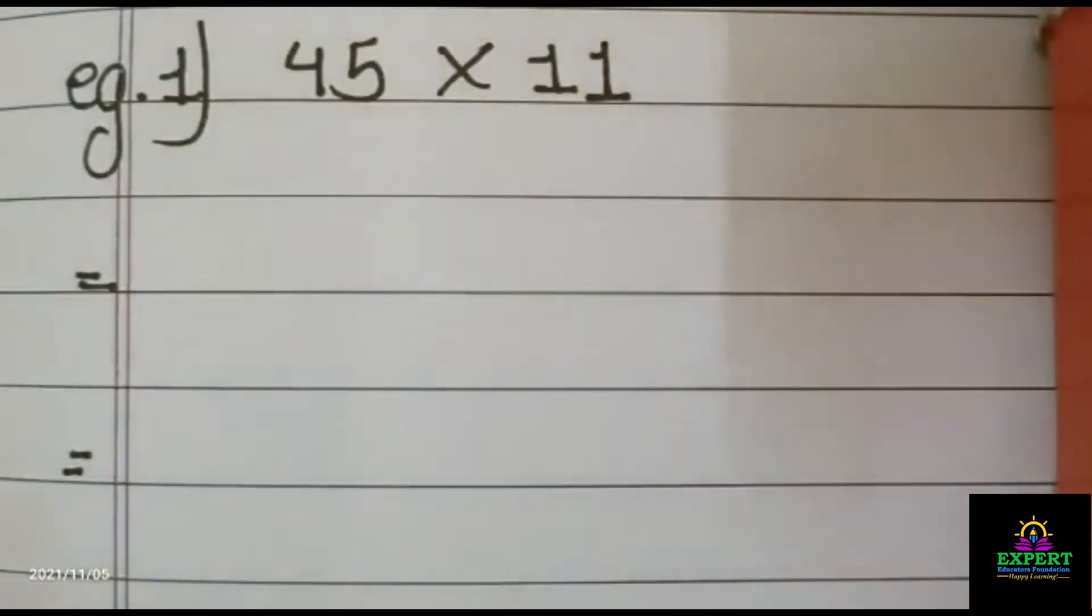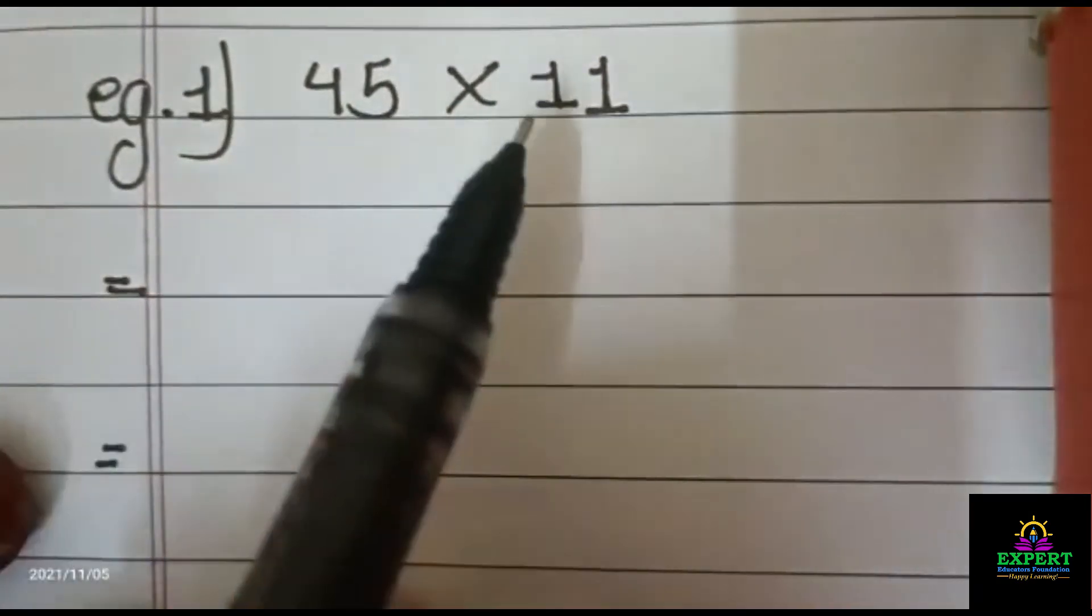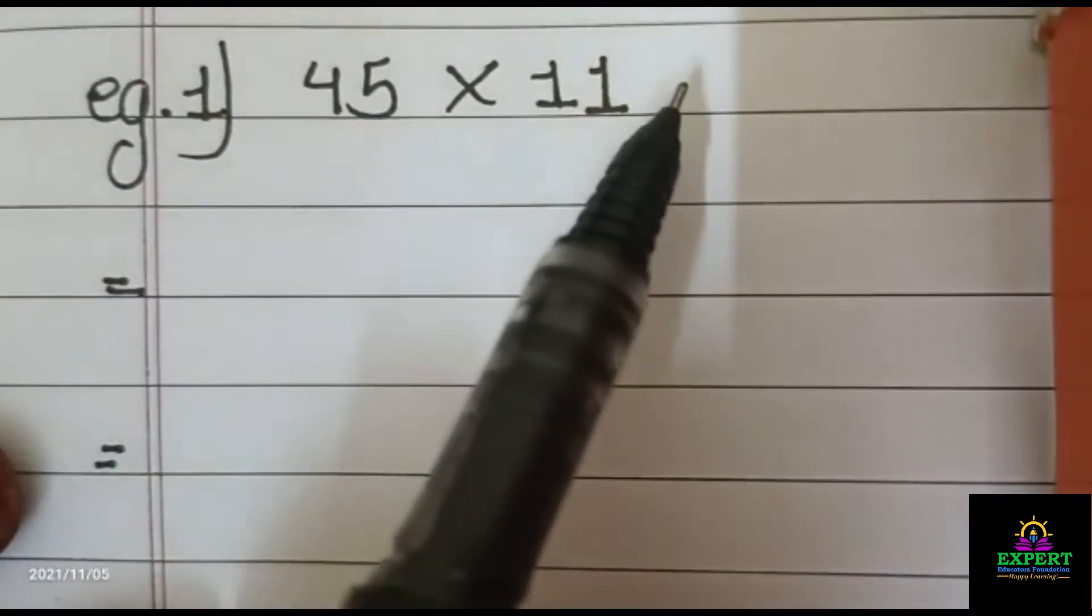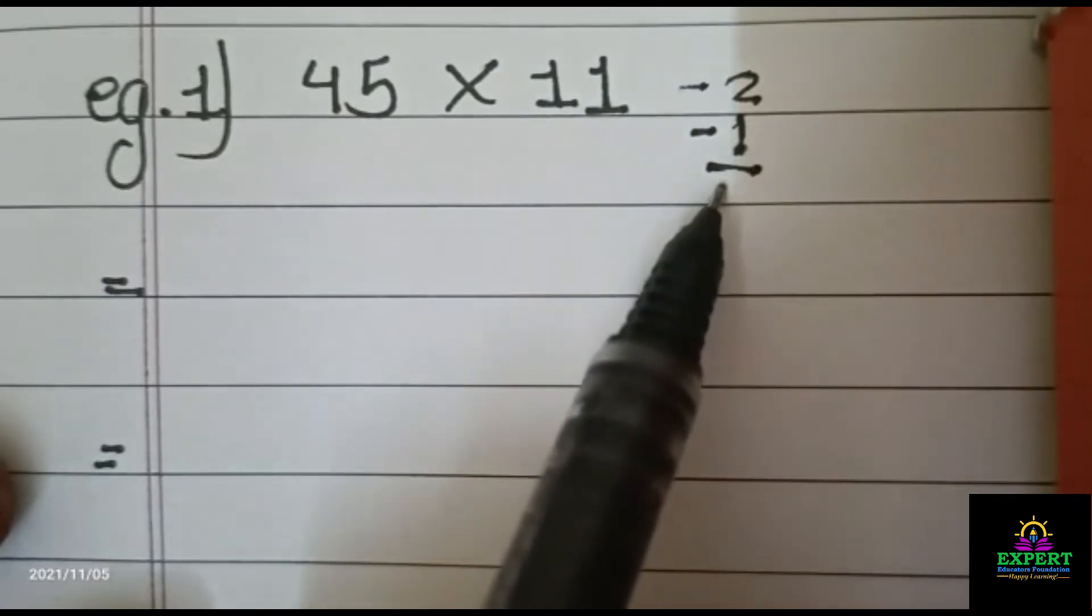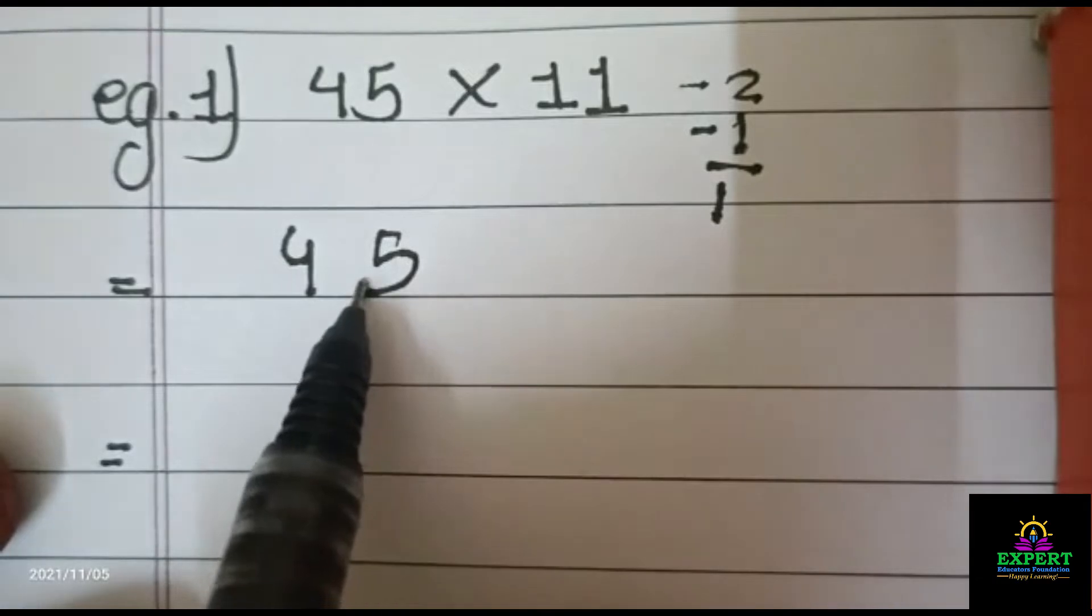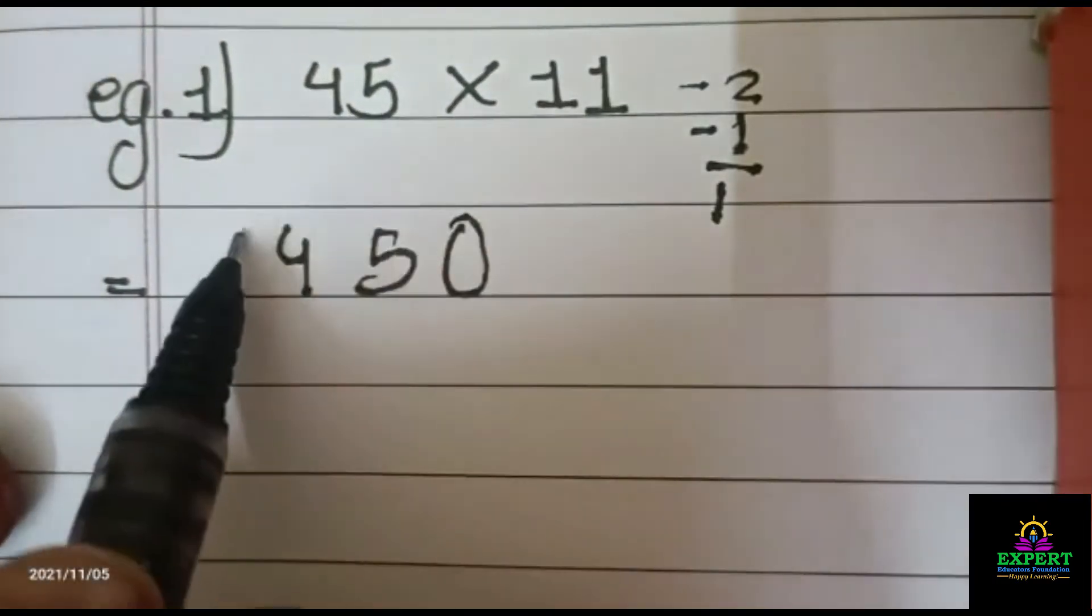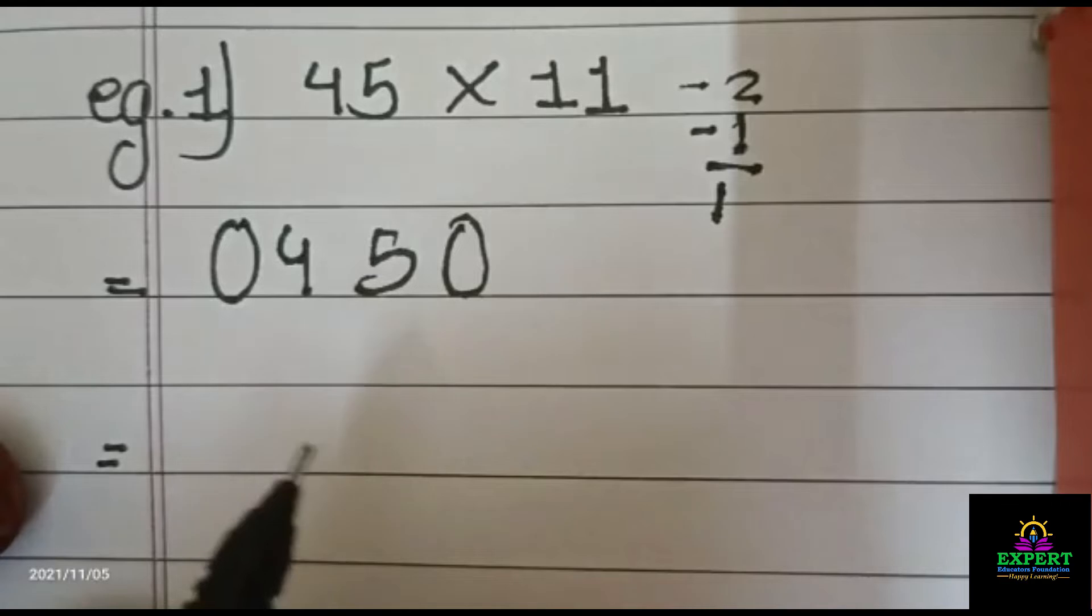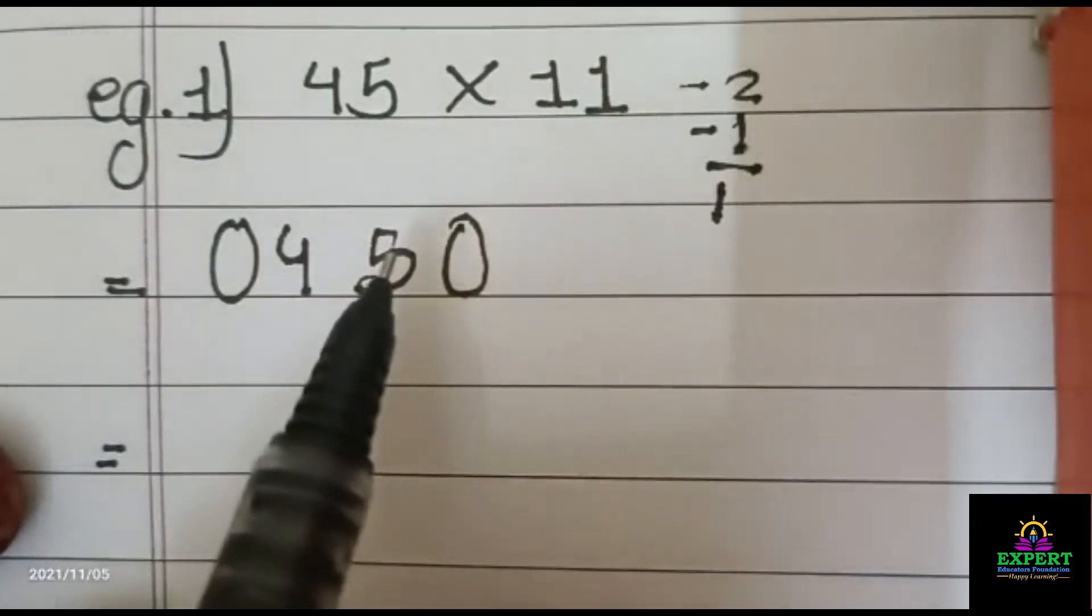So here I have taken 45 multiplied by 11. So 11 here is 2 digits, so just we will minus 1 digit. Our answer will be 1. So I will write 45 as it is and our answer is 1 digit, so I will put 1 zero at front and backward.